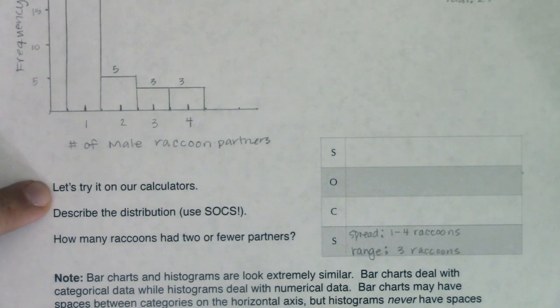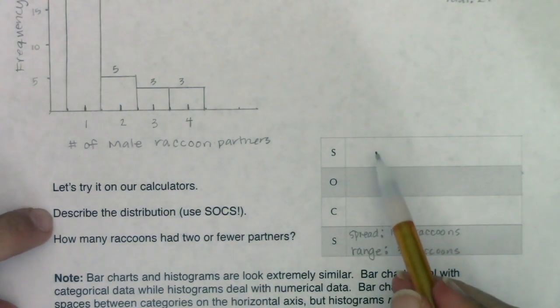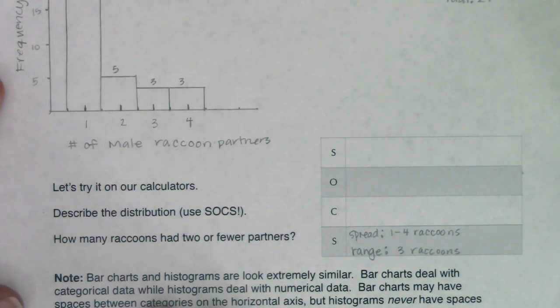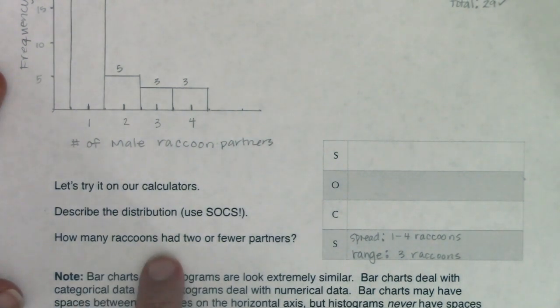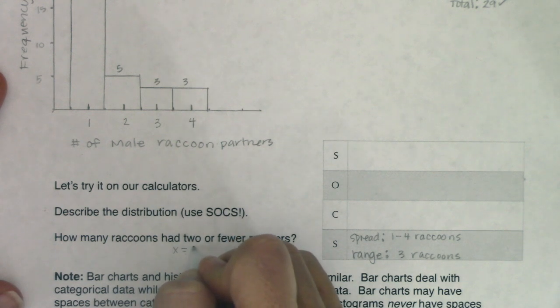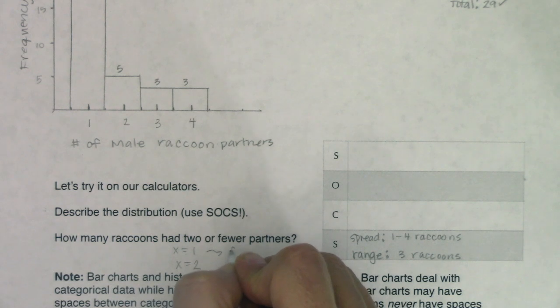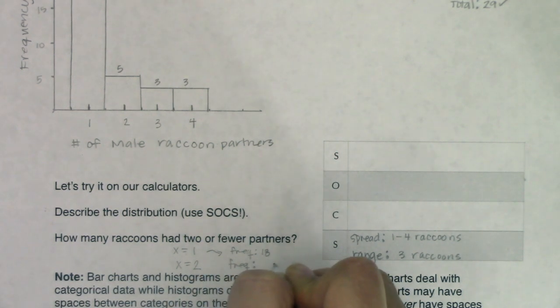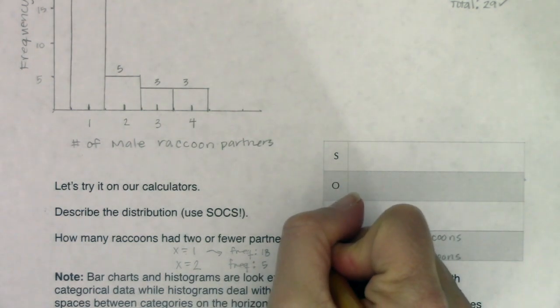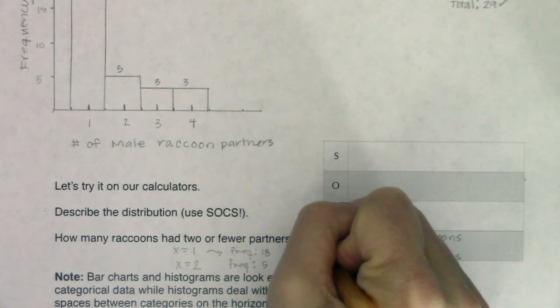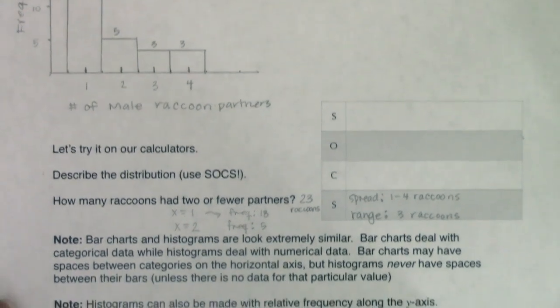In a moment, I will show you how to do this on your calculator. We are going to practice describing our distribution with SOCS. I can only do the S so far. When we get to the end of this chapter and we have all of this vocab under our belt, I will come back and we'll go through all of these together, all of the SOCS. How many raccoons had two or fewer partners? If you have two or fewer partners, that means your variable was you had one partner or you had two partners. How many raccoons had one partner? That frequency count was 18. How many raccoons had two partners? That frequency count was five. So what is the answer to this question? The cumulative frequency is 23. So 23 raccoons.